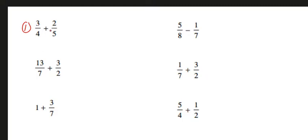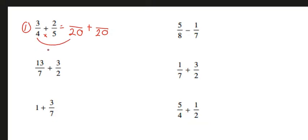We're going to start with number 1: 3 over 4 plus 2 over 5. The goal is to get the same denominator, so we need to think about the least common denominator between 4 and 5, or the least common multiple. If we multiply 4 and 5, we get 20, and this ends up being the least common denominator. We have to think about how do we get from 4 to 20. 4 times 5 is 20, so we need to do the same to the number on top. 3 times 5 is 15, and 3 over 4 becomes 15 over 20.